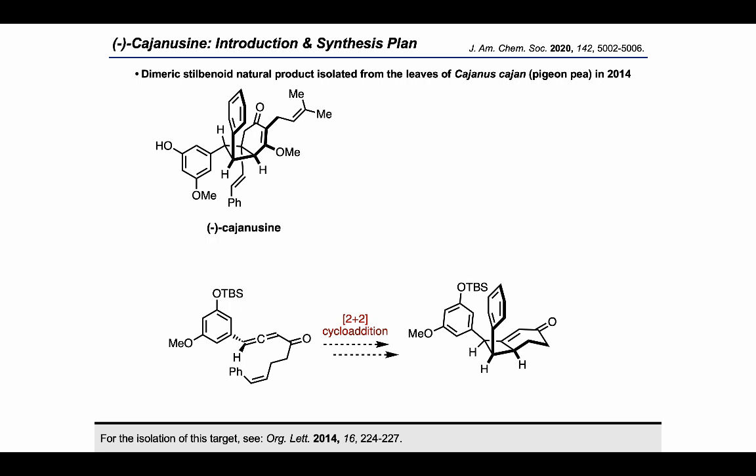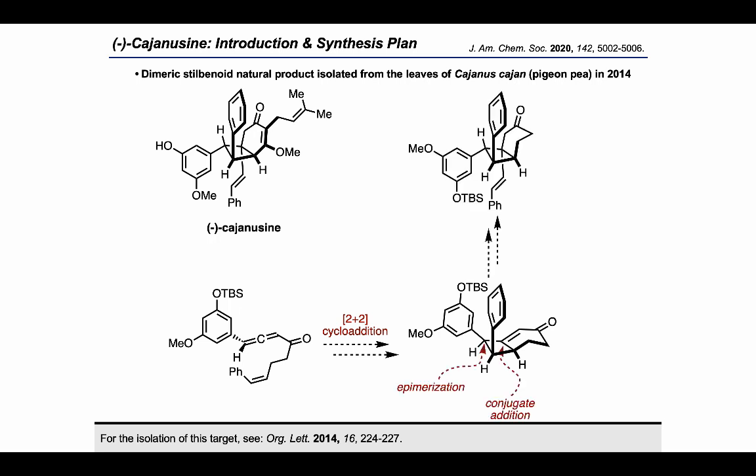Afterwards, it would be necessary to carry out an epimerization as well as a conjugate addition in order to install the requisite functionality. Then, elaborating the cyclohexanone was projected to allow the completion of the synthetic route.